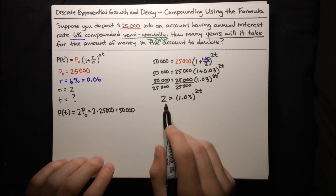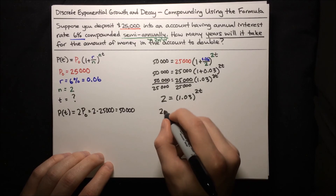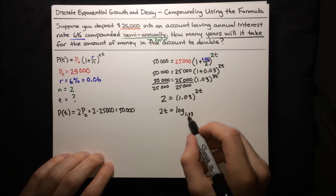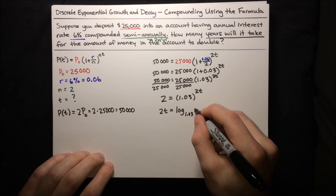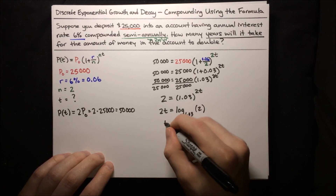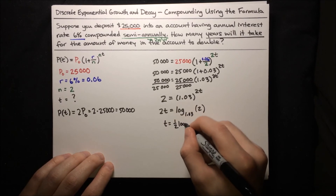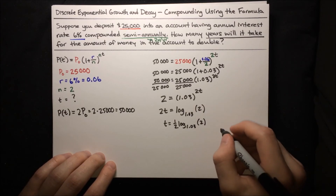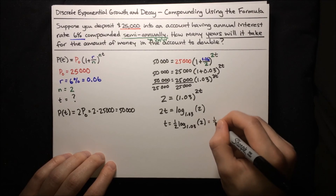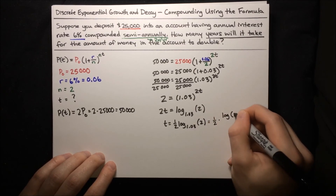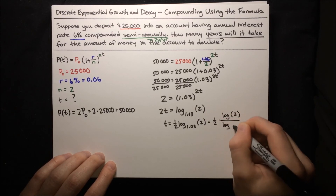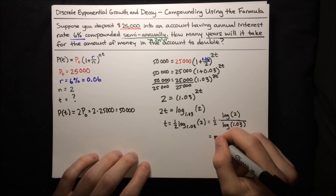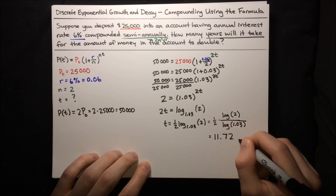Now let's introduce some logs to get the 2T out of the exponent. 2T is just log base 1.03 of 2. So T is then just (1/2) times log base 1.03 of 2. Remember you can calculate that with your calculator by using the change of base formula: that's (1/2) times log(2) over log(1.03). The result when you do that is T is roughly 11.72 years.